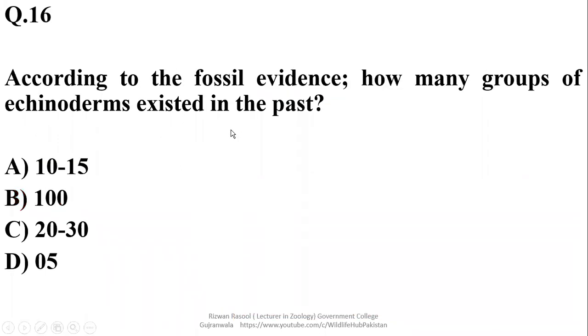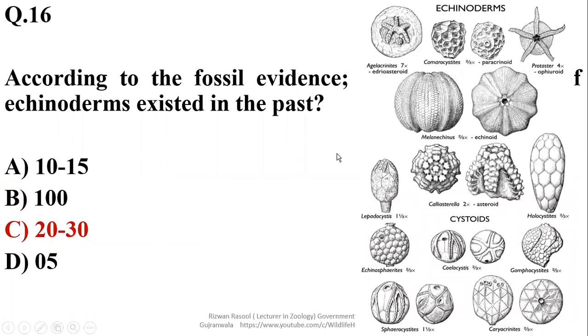According to the fossil evidence, how many groups of echinoderm existed in the past? There were almost 20 to 30 groups of echinoderm which are indicated in the fossil record, so right option over here is Charlie.